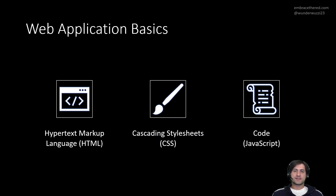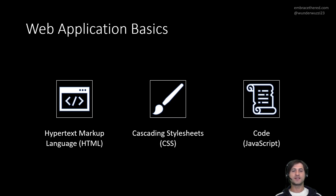Web applications consist of a set of fundamental building blocks. In particular, there is Hypertext Markup Language, called HTML. Then we have style sheets that define how the elements are rendered — things like what colors they have, how big they are, what fonts they use. And then we have code, which is most commonly JavaScript, that allows adding a lot of dynamic behavior to the web application.